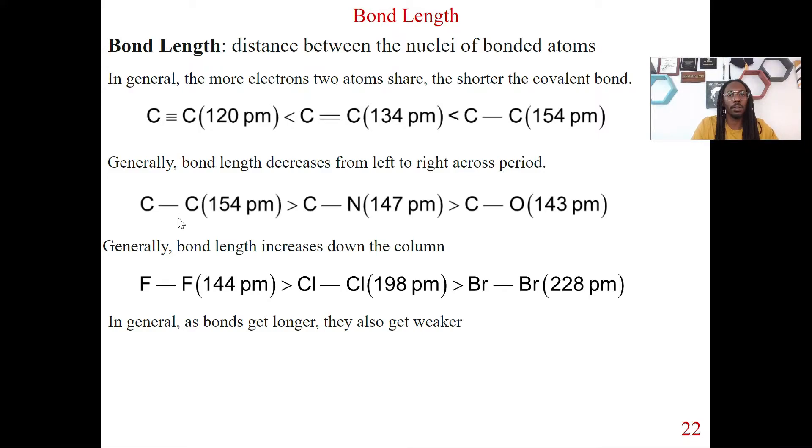So if we look at carbon-carbon, but if we go towards the right, in this case if we go from nitrogen to oxygen, we're going to see that the bond length is going to decrease over time. All right, so that's the trend. Bond length increases down a column. So if we look at fluorine-fluorine, 144, and then we go down a column, for instance bromine-bromine,